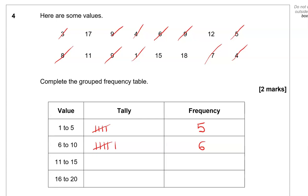11 to 15, we've got 1, 2, 3 of them. 1, 2, 3. 16 to 20, we've got 1, 2.